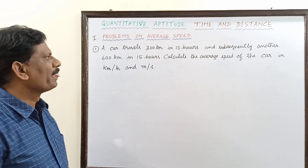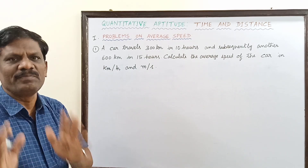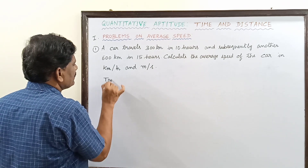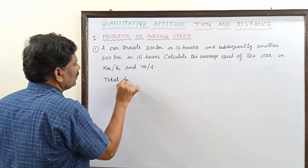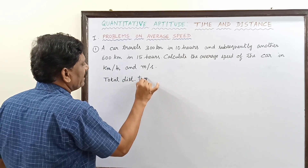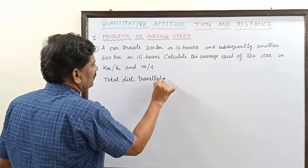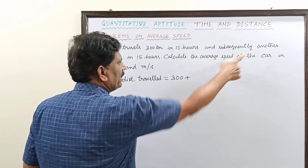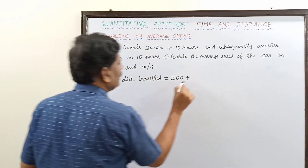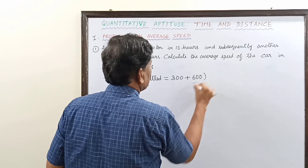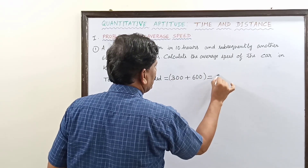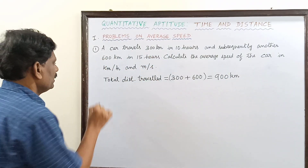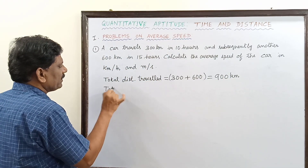This is the easiest possible numerical problem. So here, the total distance traveled by the car: first it travels 300 km, then subsequently 600 km, so 300 plus 600 is equal to 900 km.